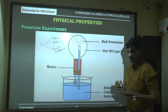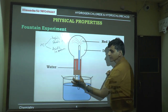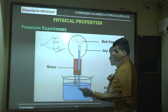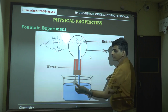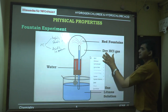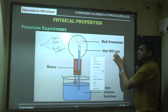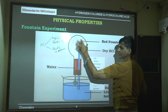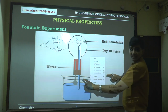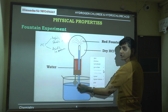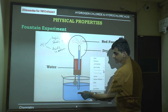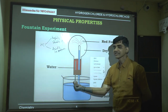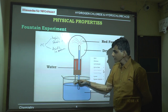In the fountain experiment, an inverted round-bottom flask filled with dry HCl gas has two openings: one for a jet tube (with both ends open) and one for a dropper filled with water. One end of the jet tube is placed in a blue litmus solution below. When the dropper is pressed, water enters the flask.